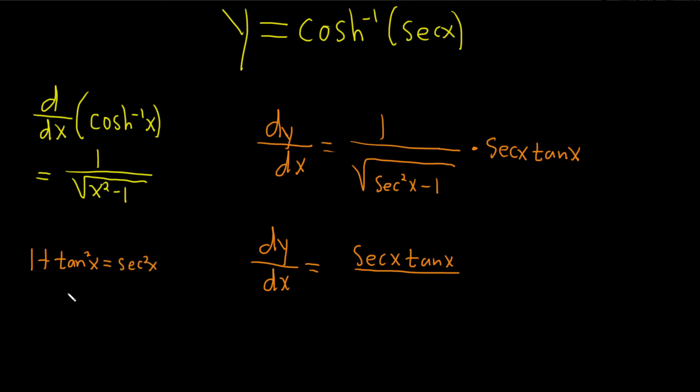And so that means that if you subtract 1 from both sides, tangent squared of x is equal to secant squared of x minus 1.